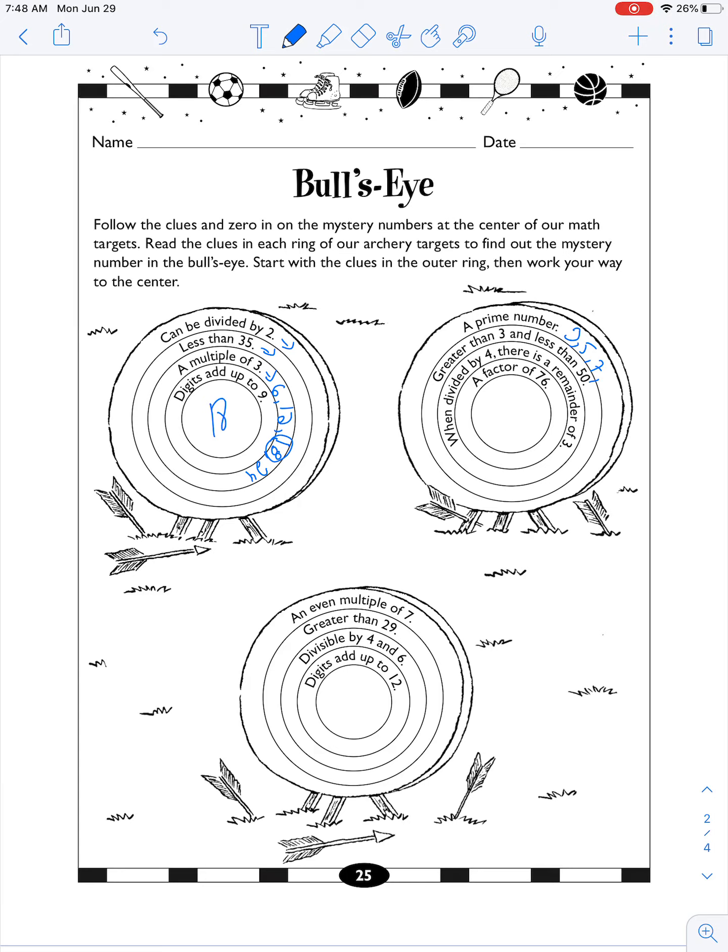Next is a prime number, so that's like all of our 3, 5, 7, 11, 13, 19, right? Greater than 3, less than 50. When divided by 4, the remainder is 3. Okay, well 7 would work for that. 11 would work for that. 19 would work for that. And then factors of 76. Let's bring out our calculator and see what would be divisible. Is 76 divisible by 7? No. Is 76 divisible by 11? No. Is 76 divisible by 19? The answer actually is yes. So 19 is your answer for this one.